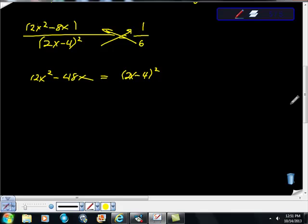Believe it or not, I have to open this up. 12x squared minus 48x. I'm going to go ahead and expand this. This will give me 4x squared minus 16x plus 16.